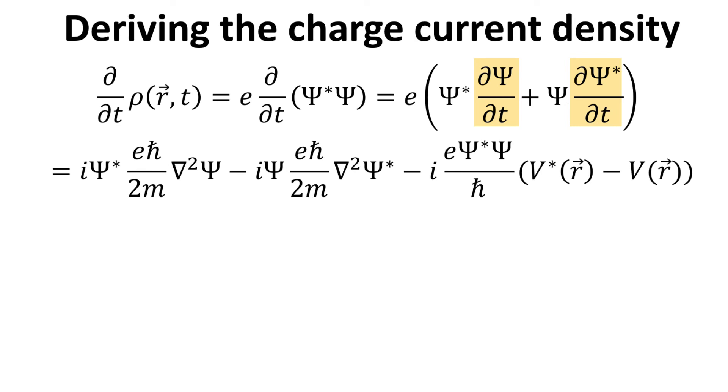The Schrödinger equation then allows us to replace the time differential of psi with psi as shown. The last term here reduced to zero due to the Hermitian property of the potential term.